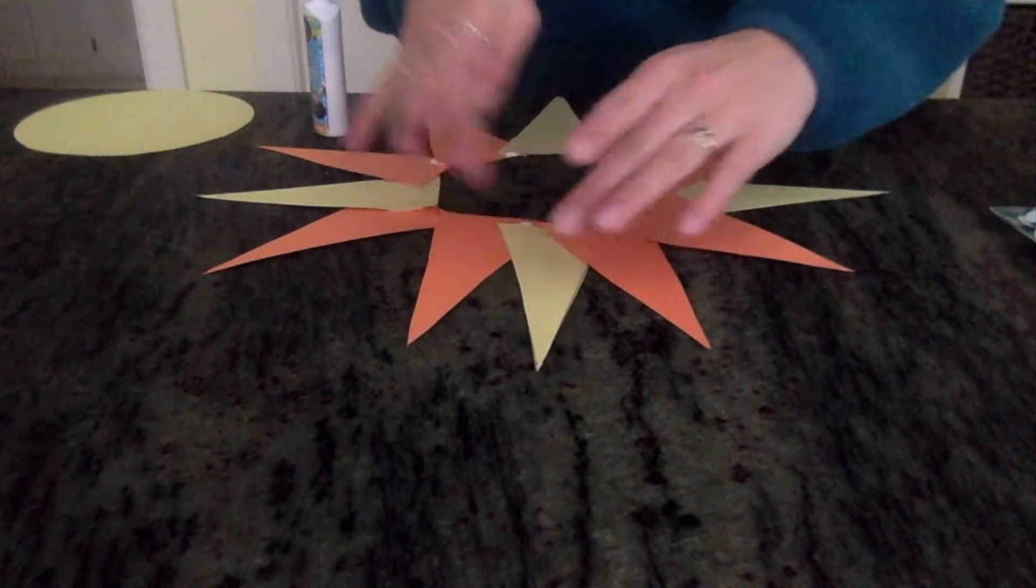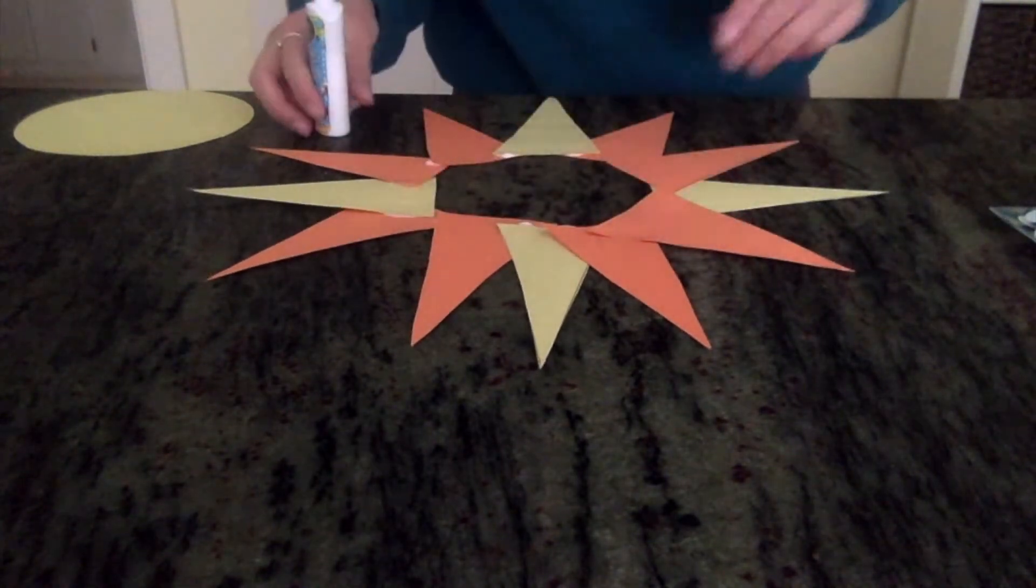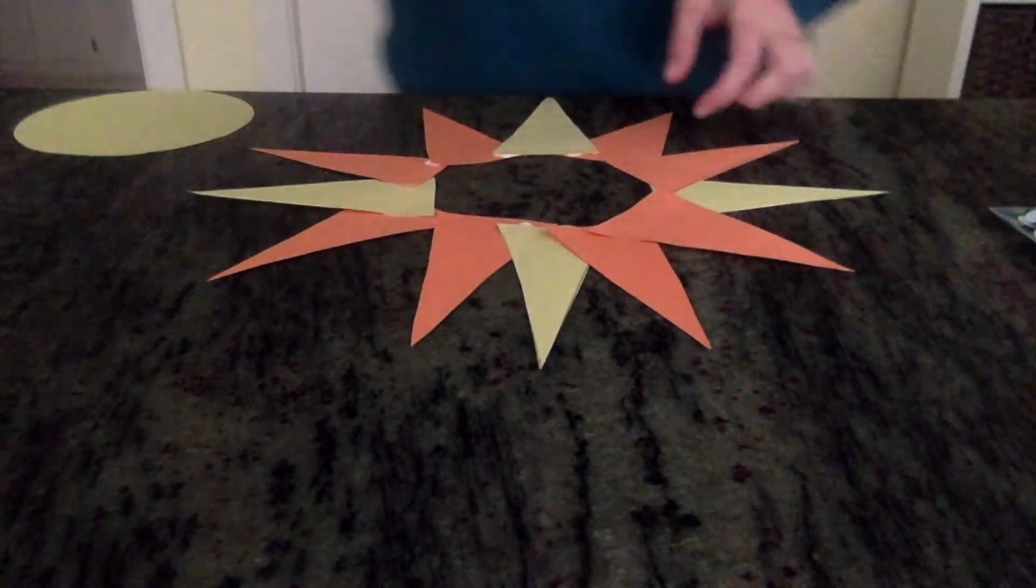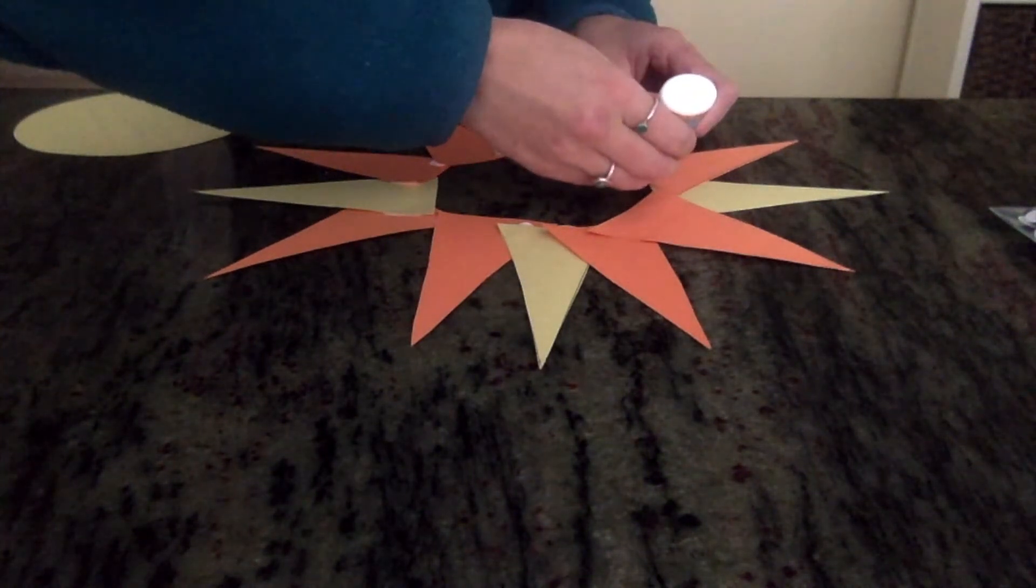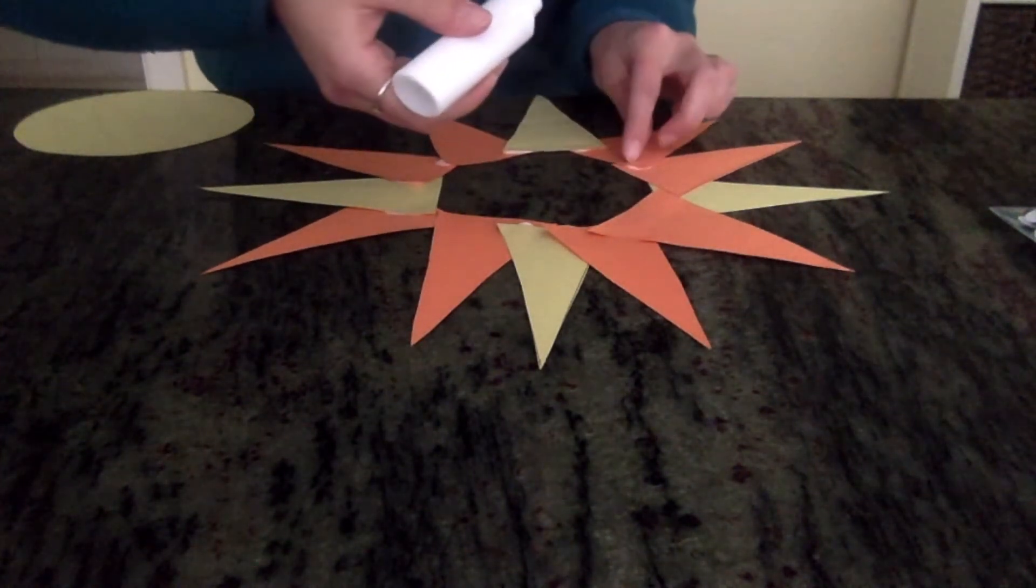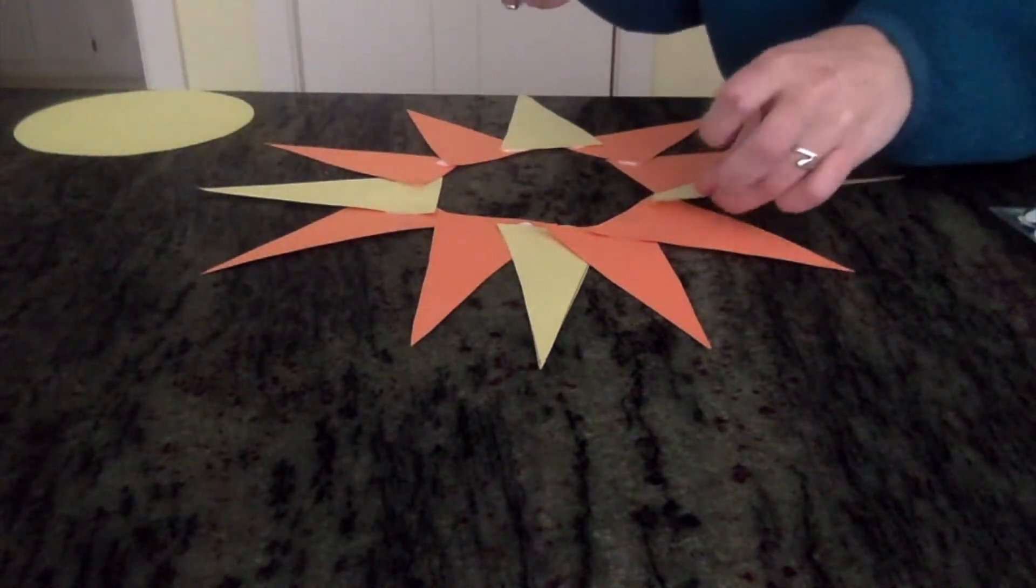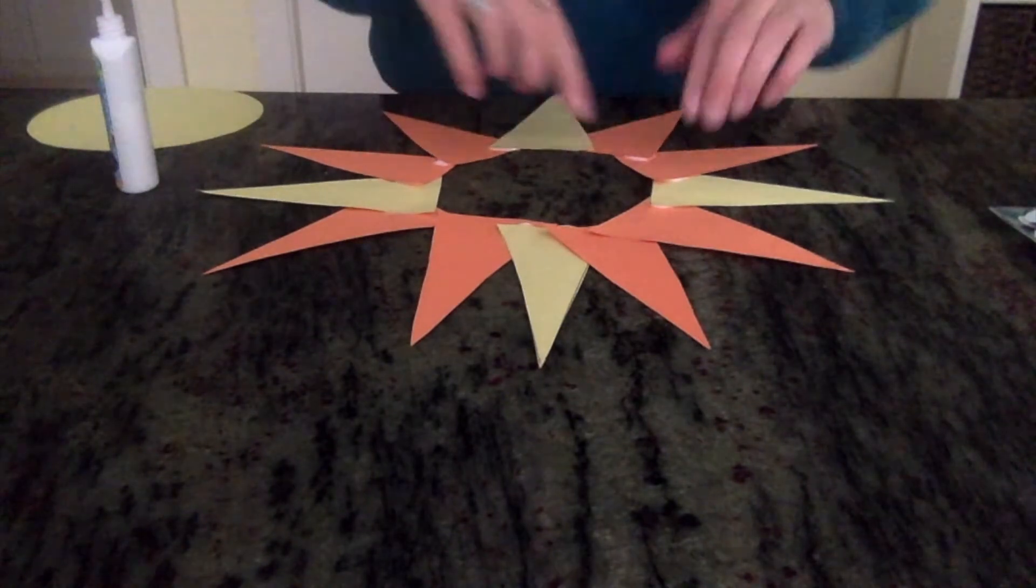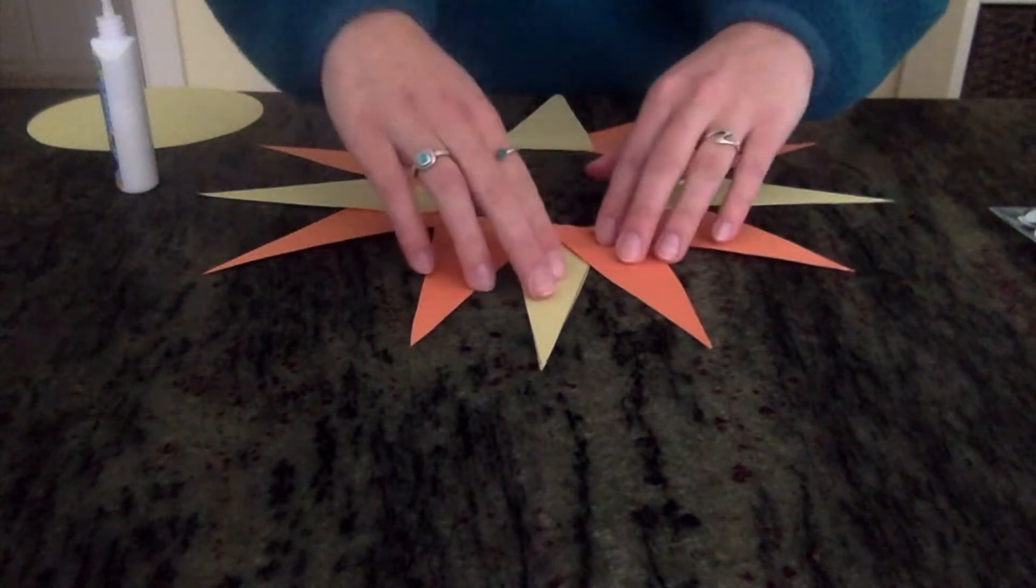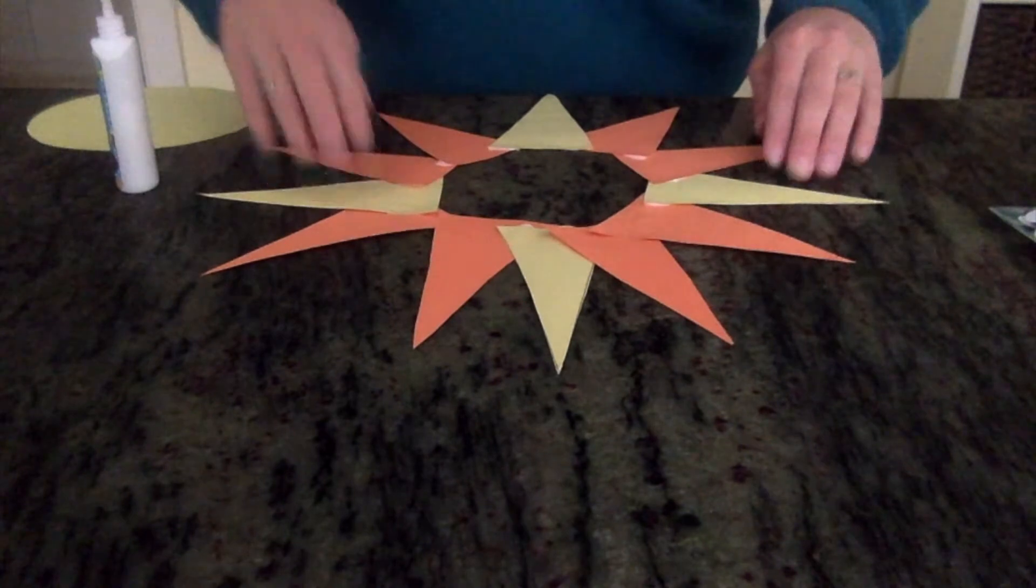Again, the most important part is that our 3, 6, 9, and 12, or in this case our yellow pieces, are all as straight as possible.